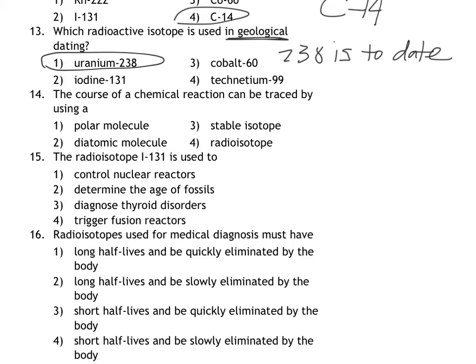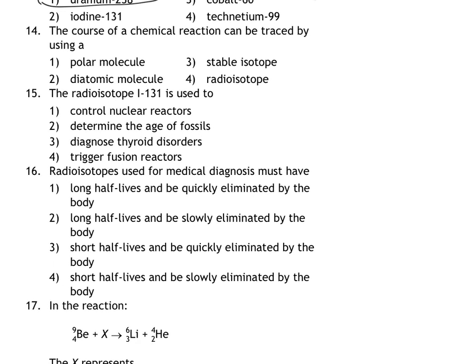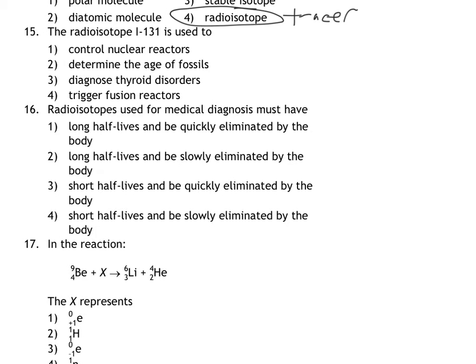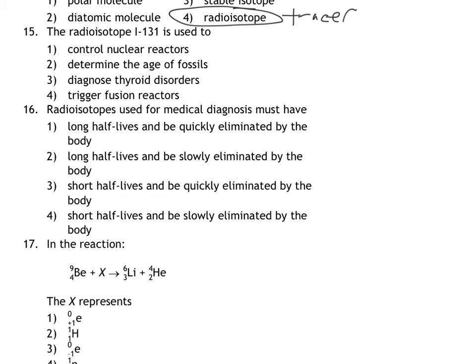Number 14. The course of a chemical reaction can be traced by using a radioisotope. And the radioisotope that we would be using for that is called a tracer, probably not very surprisingly based on the question. Yeah, that's all I really have to say about that one. 15, the radioisotope iodine-131. So this is an example of a specific thing that you need to know. Iodine-131 is particularly useful in diagnosing and treating thyroid disorders. And I see the word thyroid here in choice 3, so I'm going to go with choice 3.